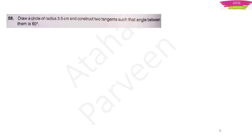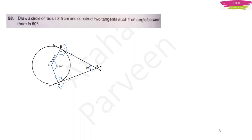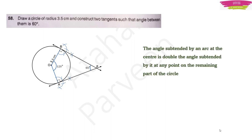Question 58: Draw a circle of radius 3.5 cm and construct two tangents such that the angle between them is 60°. The angle between the two radii at the center must be 120° (double of 60°). Draw perpendicular bisectors at points A and B on the circle and extend them until they meet — these are your tangents with 60° between them.